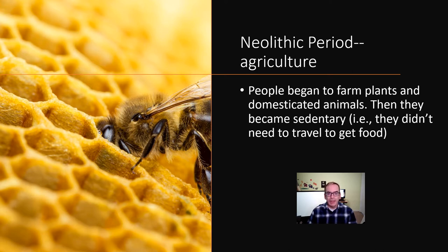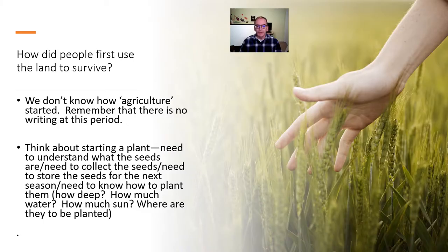What this means ultimately is that people weren't moving around being hunter-gatherers anymore. They now lived in one spot because that's where their crops and their animals were. They didn't have to travel for their food. You have to wonder how the first people started to survive doing this. One important point is that we don't know how agriculture got started.